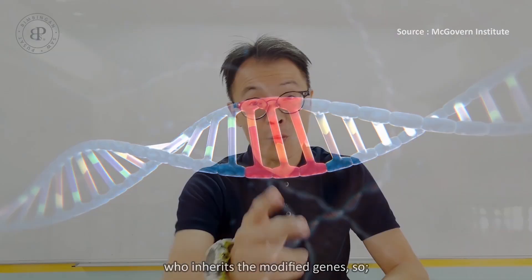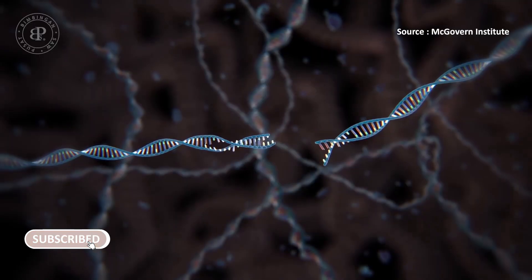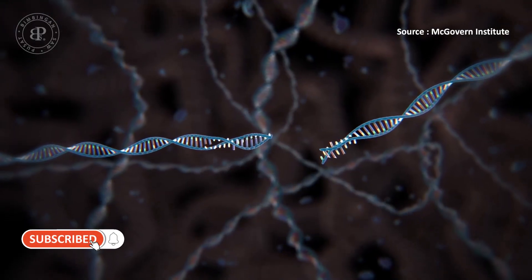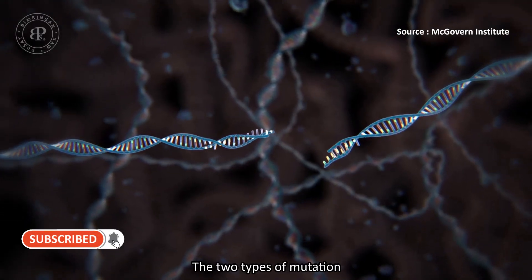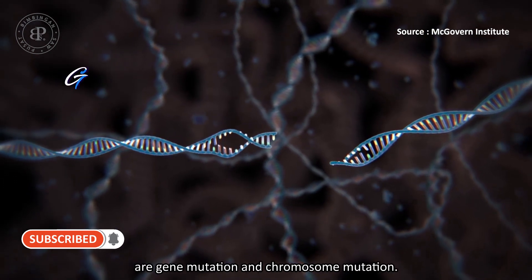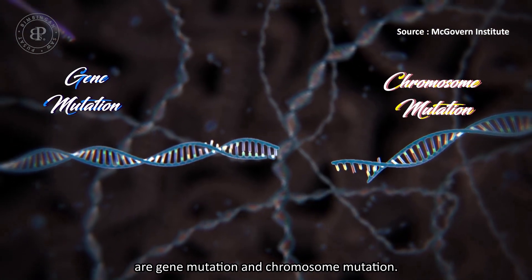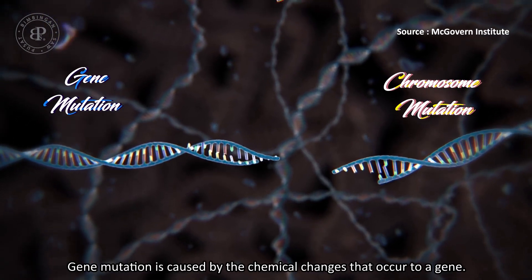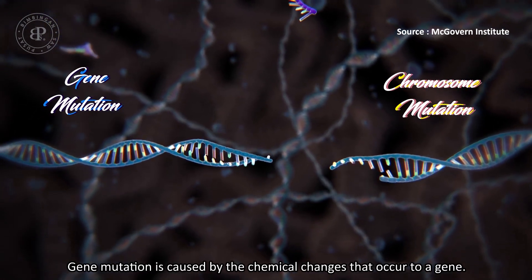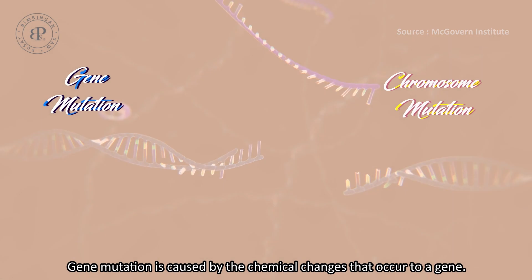So, what are the two types of mutations and their effects on humans? The two types of mutation are gene mutation and chromosome mutation. Gene mutation is caused by the chemical changes that occur through a gene.